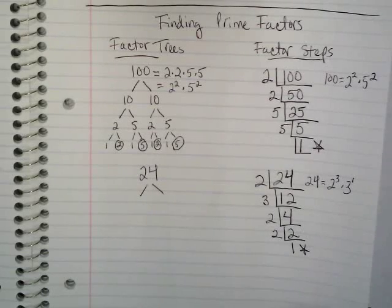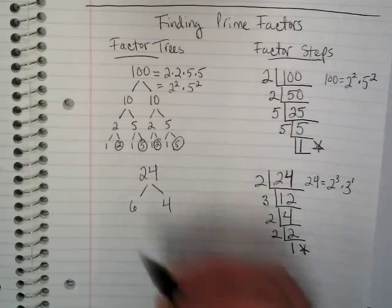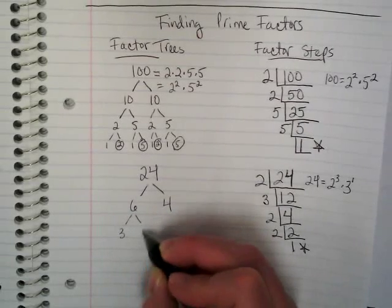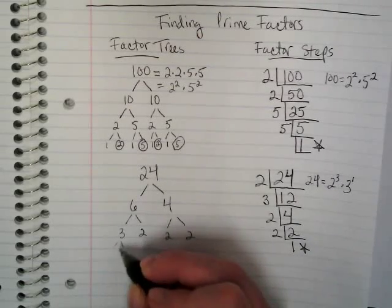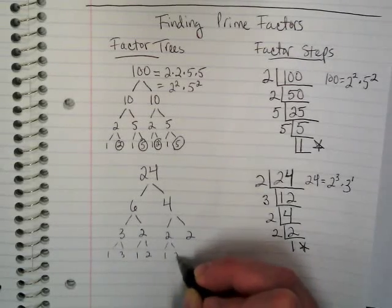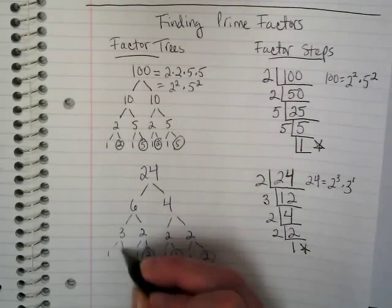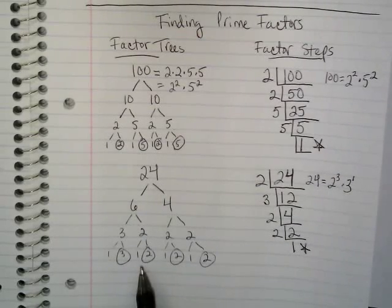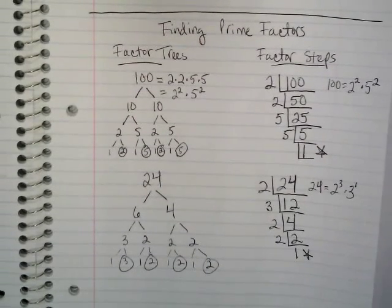What's nice about factor trees is you don't have to start with a prime number to divide by — you're just going to end with them. So I could say 6 times 4 for 24. Neither one of those are prime, so I keep dividing: 3 times 2 and 2 times 2. These are all prime — the only thing I can multiply to get them is 1 and themselves. Same numbers as before: three 2s and a 3. So those are two different ways to find prime factors of a larger number when you're looking to find the greatest common factor.